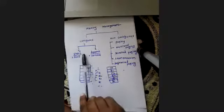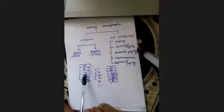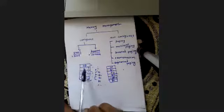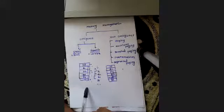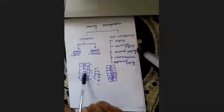Memory management is done by two types: contiguous and non-contiguous. In the contiguous method, whenever processes are placed in main memory, they are placed continuously in a continuous address location. It doesn't happen that one part of a process is here and another part is somewhere else — that doesn't happen in contiguous memory allocation.